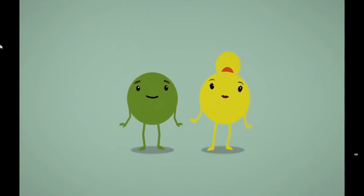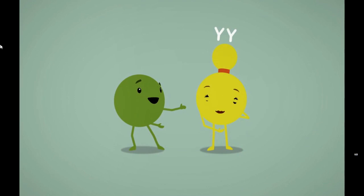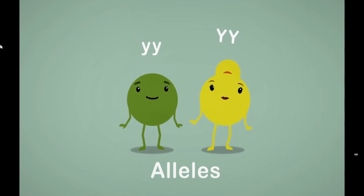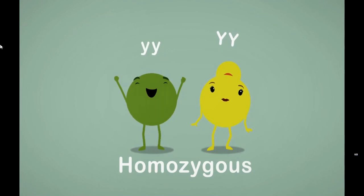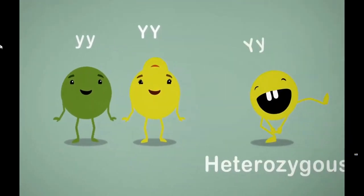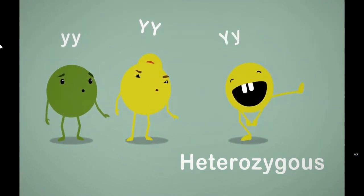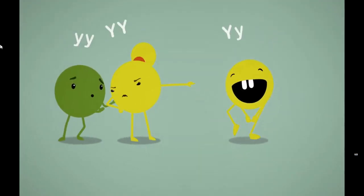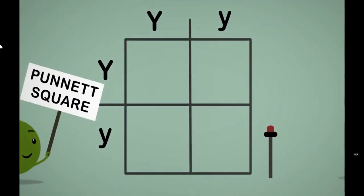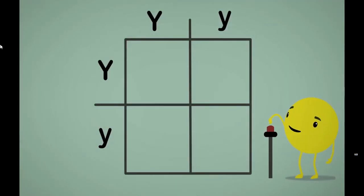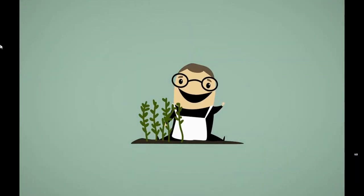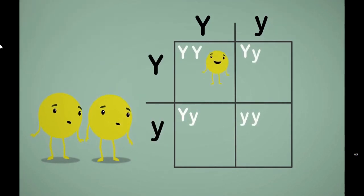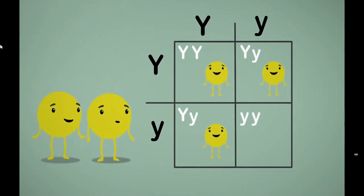Then he let the new yellow-seeded hybrid plant self-cross. In this second generation he got both yellow and green, which meant the green trait had been hidden by the dominant yellow. He called this hidden trait recessive. Mendel inferred that each trait depends on a pair of factors — one from the mother and one from the father. Now we know these factors are called alleles, representing different variations of a gene. Depending on which type of allele is found, we have homozygous — where both alleles are identical — and heterozygous — where the two alleles are different.